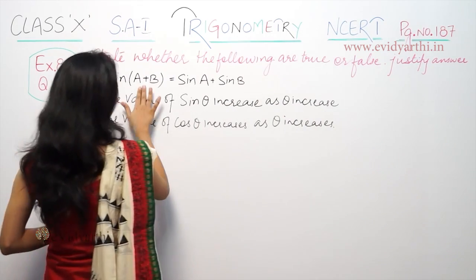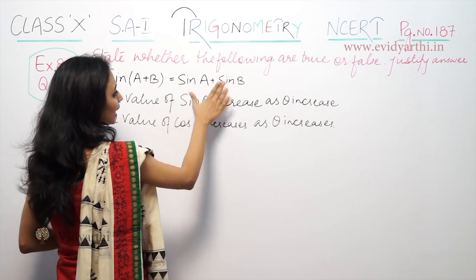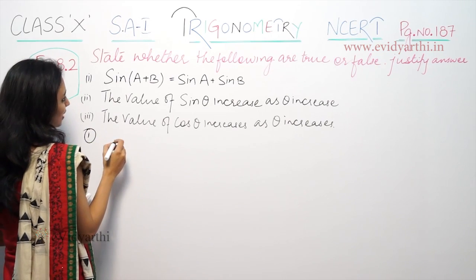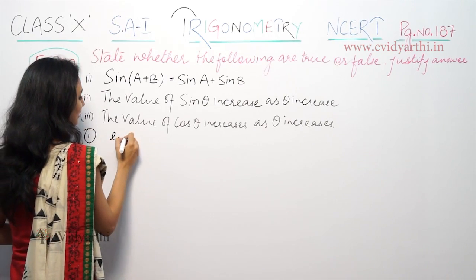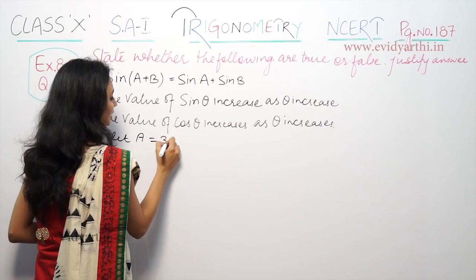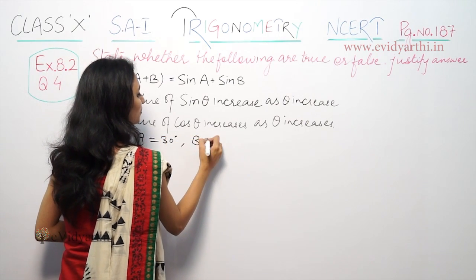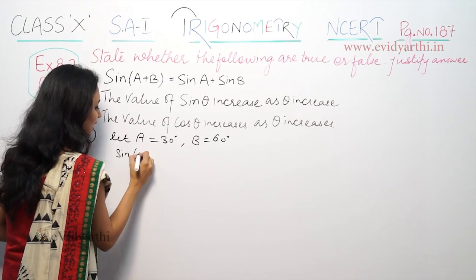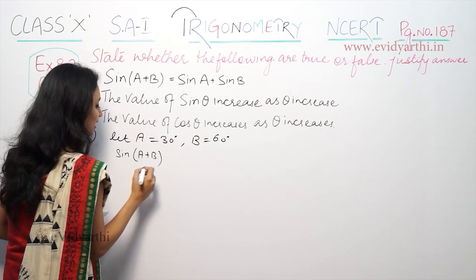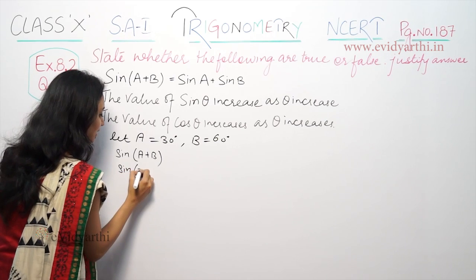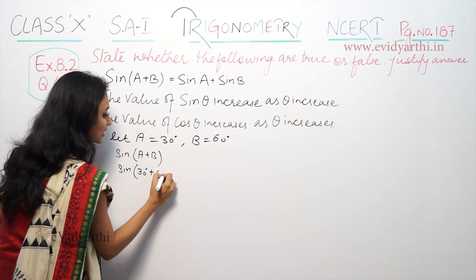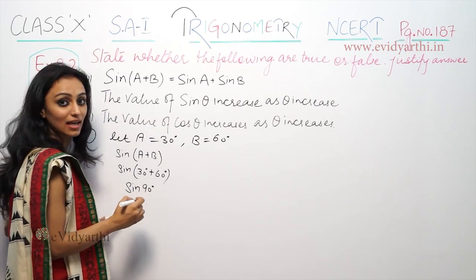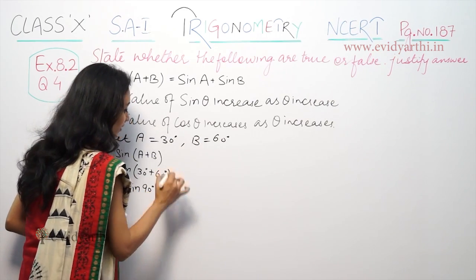The first part is: sin(A + B) is equal to sin A plus sin B. Let's suppose we let angle A = 30° and angle B = 60°. So sin(A + B) means sin(30° + 60°), that means sin 90°. And the value of sin 90° is 1.